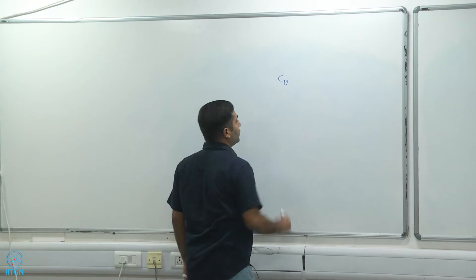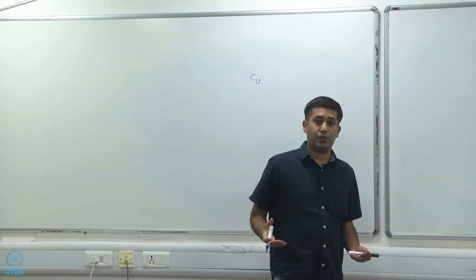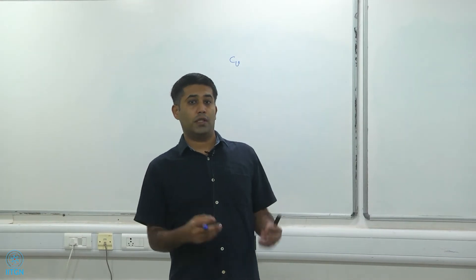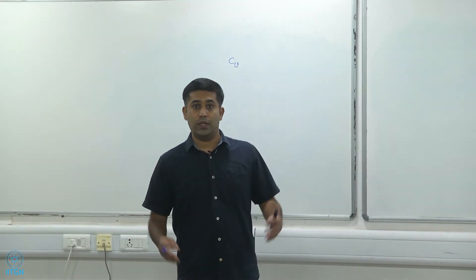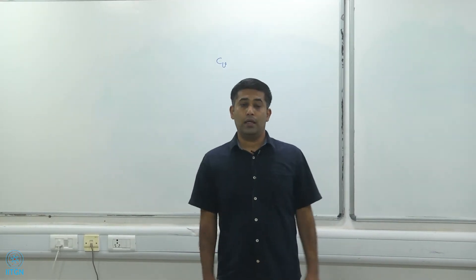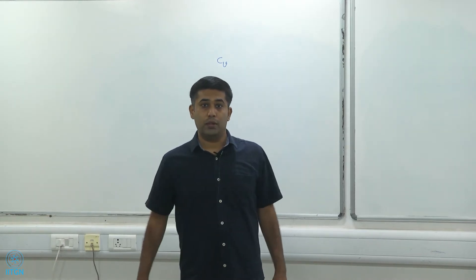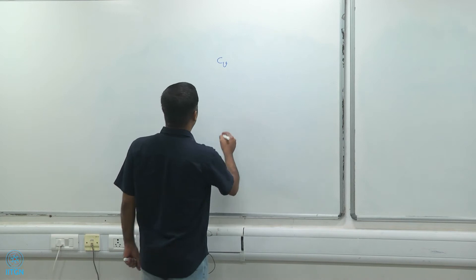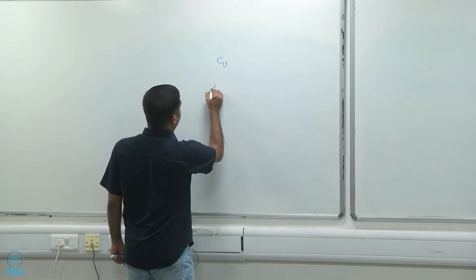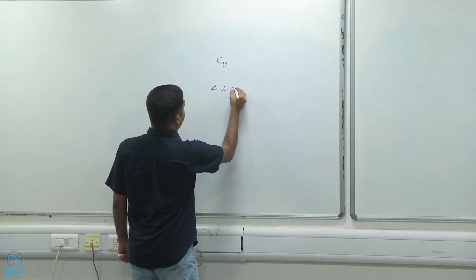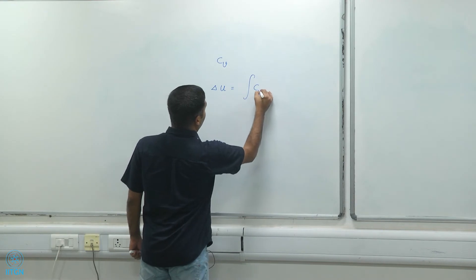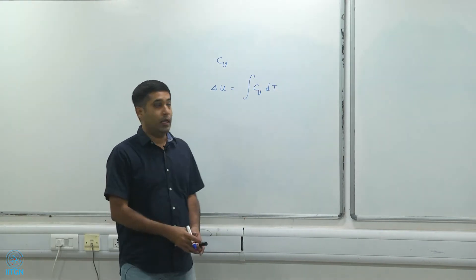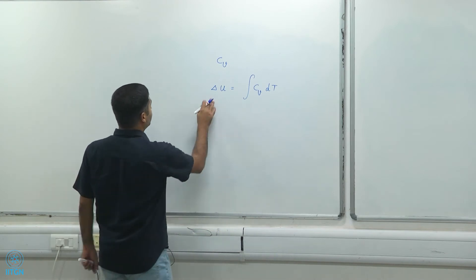If we know Cv for a particular substance undergoing a constant volume process — the process has to be a constant volume process, there cannot be an expansion or a contraction — then we can write that delta U is equal to the integral of Cv dT over the process, if this is a constant volume process.